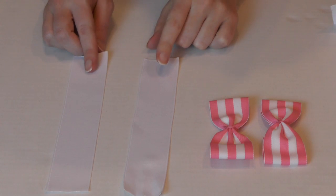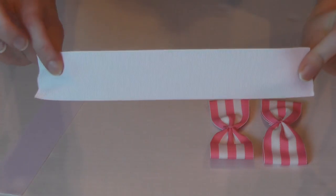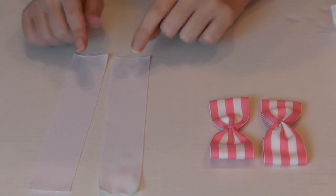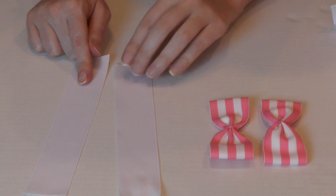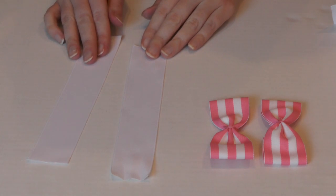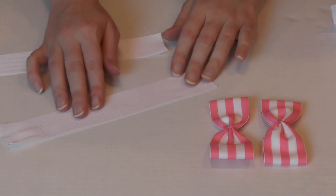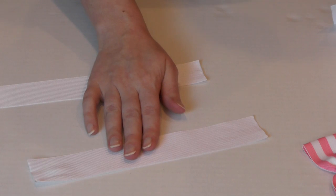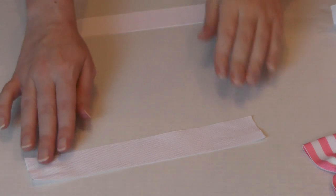Okay, now for the ears, you're going to need two white pieces of ribbon. And both of these are one and a half inch width, and they both measure eight inches in length. All right, we're going to go ahead and make the ears.